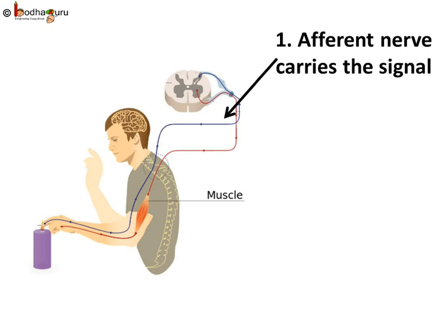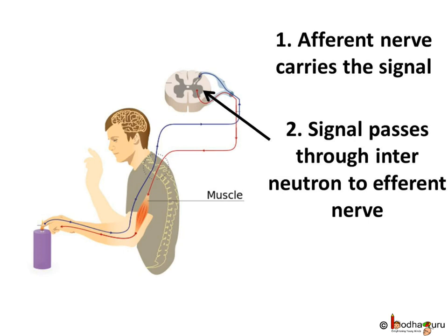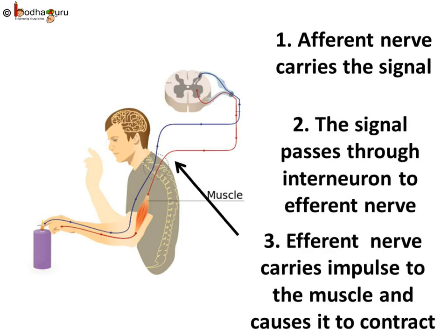Now, coming back — how does a muscle move because of the reflex action? Say something happened like you touched a flame. The stimulus, that is the burning flame, stimulates the pain receptors of the skin. Then, the pain receptors initiate an impulse in a sensory, or afferent, nerve. Afferent nerve fibers carry the signal to the spinal cord. Then, the signal passes through the short interneuron in the spinal cord to an efferent nerve, that is the motor nerve. The impulse that the efferent nerve carries acts as an instruction. The efferent nerve will carry the impulse to the muscle which needs to be contracted. This causes the muscle to contract and pull away from the flame.